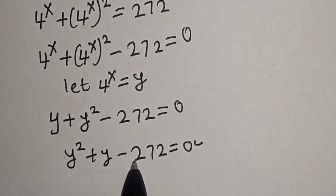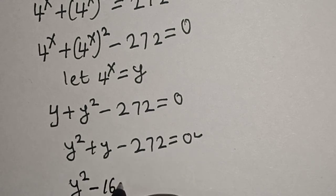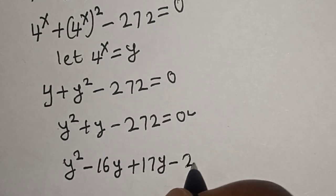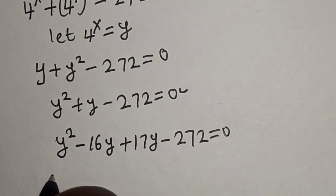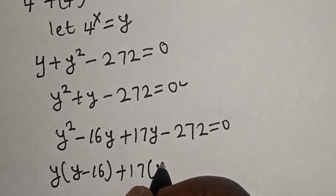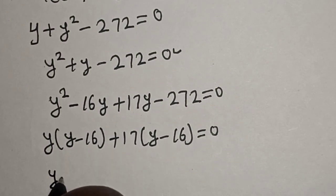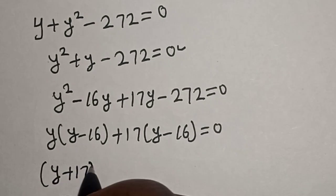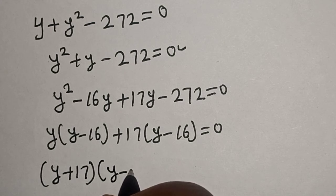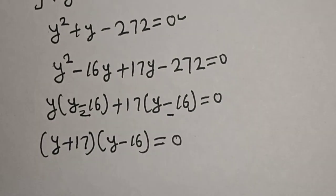This quadratic can be solved using the factorization method or the quadratic formula. Using factorization: y squared minus 16y plus 17y minus 272 is equal to 0, which gives y(y minus 16) plus 17(y minus 16) is equal to 0, so (y plus 17)(y minus 16) is equal to 0.